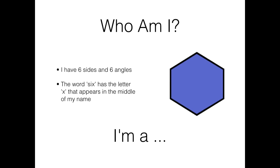Who am I? I have six sides. One, two, three, four, five, six. And six angles. One, two, three, four, five, six. The word six has the letter X that appears in the middle of my name. I'm a Hexagon.